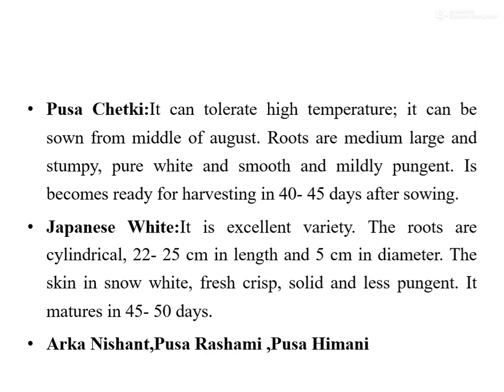The next cultivar is Japanese White, which is an excellent variety. The roots are cylindrical, 22 to 25 cm in length and 5 cm in diameter. The skin is snow white, fresh, crispy, solid, and less pungent, maturing within 45 to 55 days. Other important varieties include Arkanishan, Pusa Reshmi, Pusa Himani, and Pusa Chitki. Pusa Chitki is frequently asked in exams as it is a tropical variety that grows in high temperature conditions.